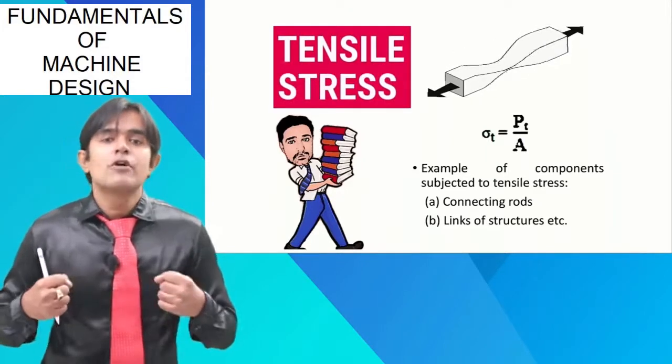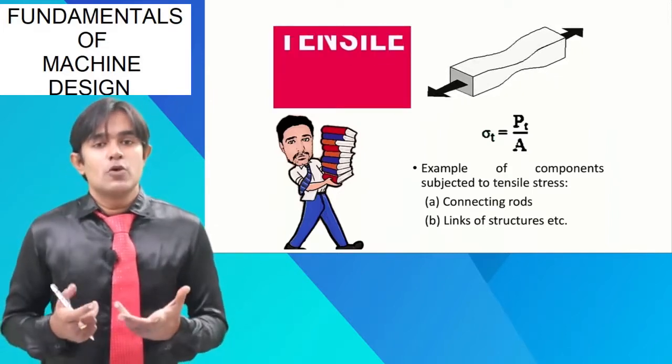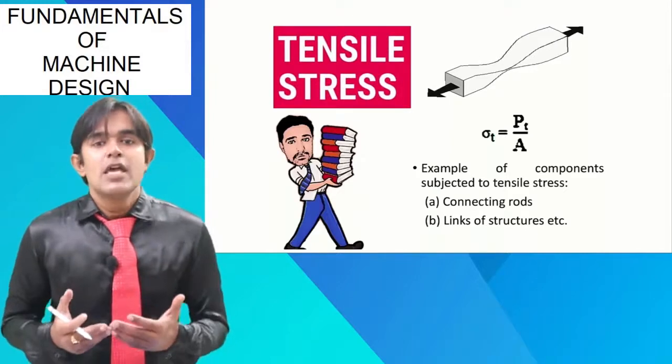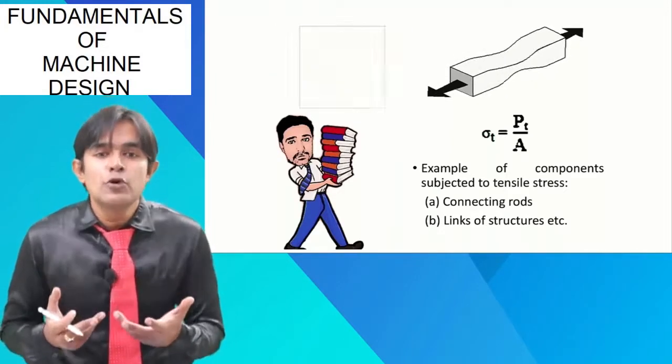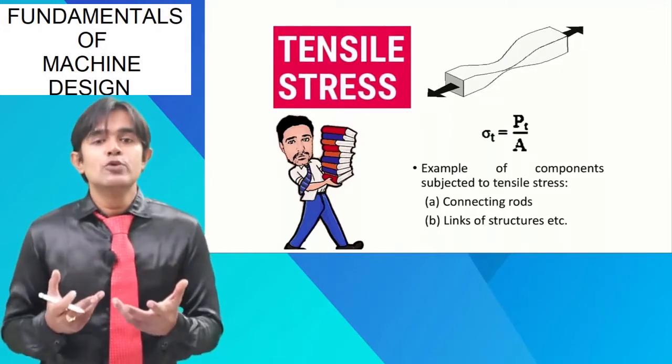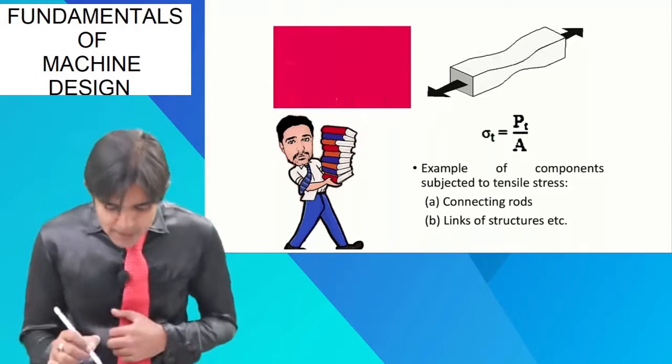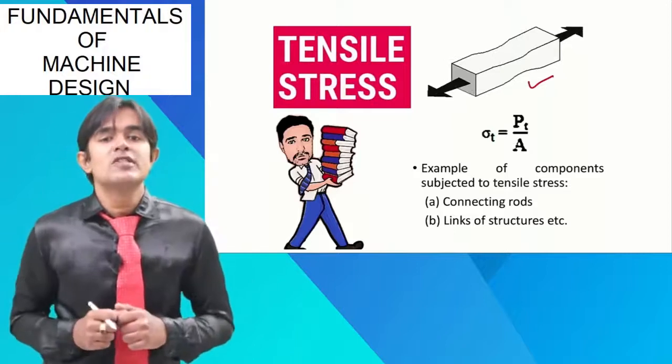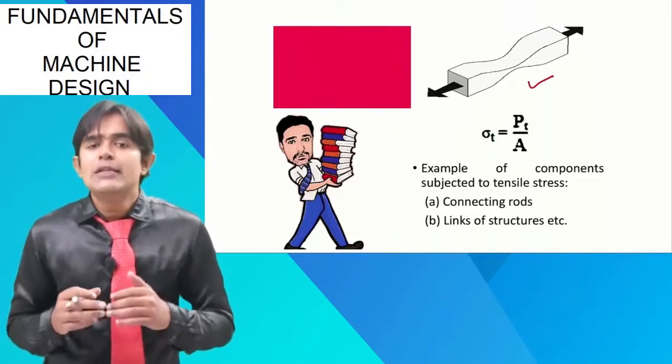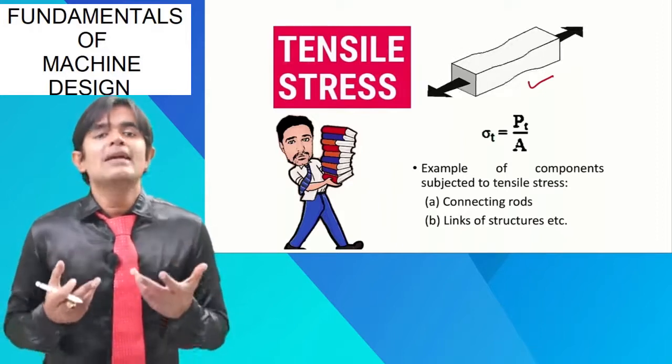That elongation of length is because of the tensile stress. So, I will again repeat the definition. If a body is going through two equal and opposite pull forces, then the stress induced in the body is called the tensile stress. This diagram clearly shows that the two equal and opposite forces are given. If I need to denote this stress in a mathematical form, then this is how it is done.